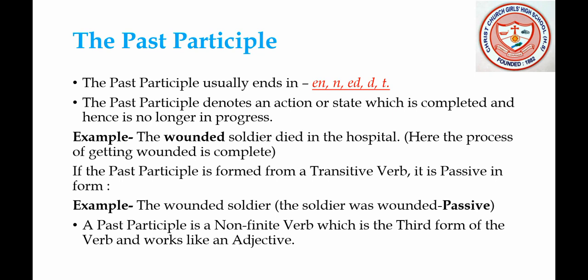Example: 'The wounded soldier died in the hospital.' Here the process of getting wounded is complete, which means the action is over. If the past participle is formed from a transitive verb, it is passive in form. For example, 'the wounded soldier' — in the passive form the sentence will be 'the soldier was wounded.'